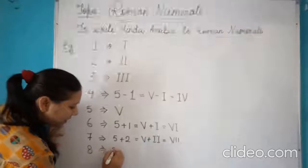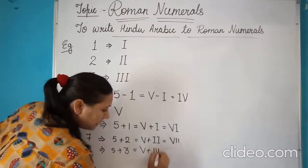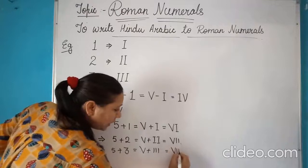Similarly, the symbol of 8 is 5 plus 3, V plus III. So the symbol for 8 is this.